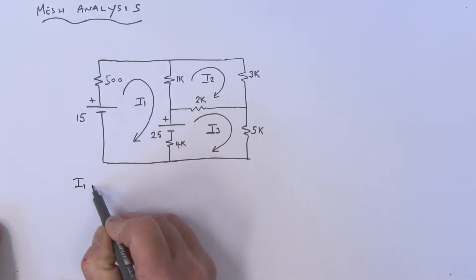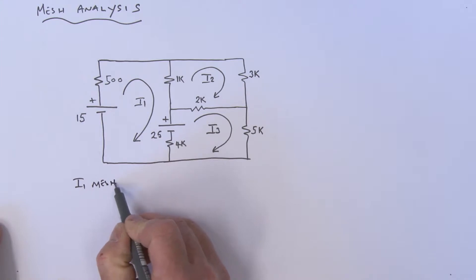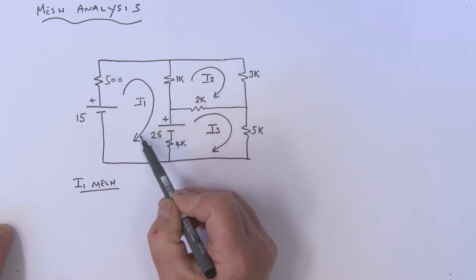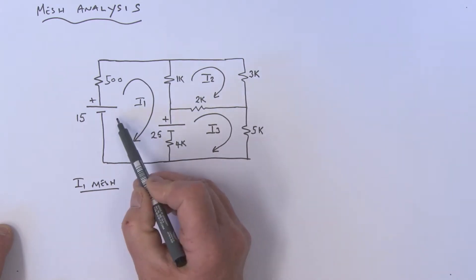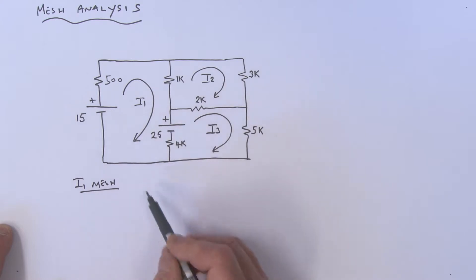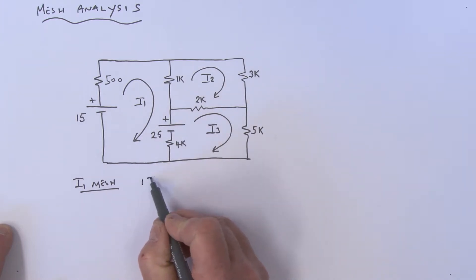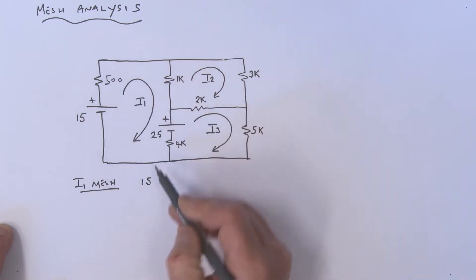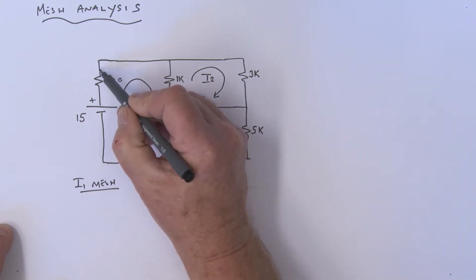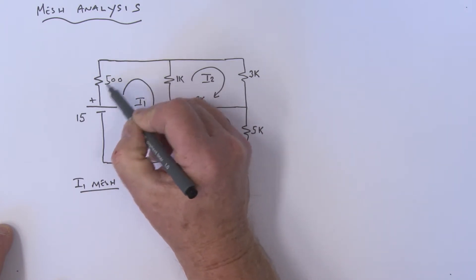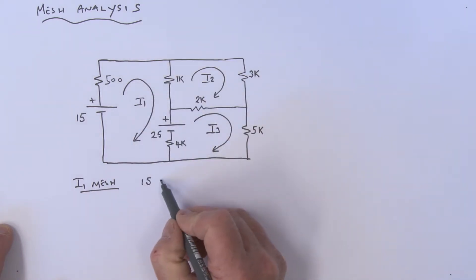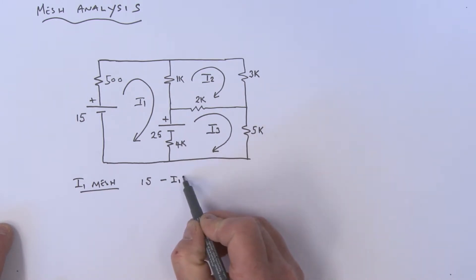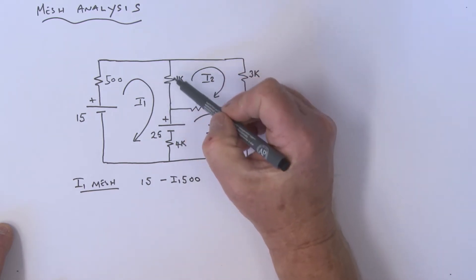Let's look at the I1 mesh. We'll start here and travel in the same direction as the mesh current. We're going up in voltage here, so we call that 15. Coming around like this, the mesh current is going in this direction - from a plus to a minus - that would be our defined polarity across that 500 ohms, so that would be a minus I1 times 500.